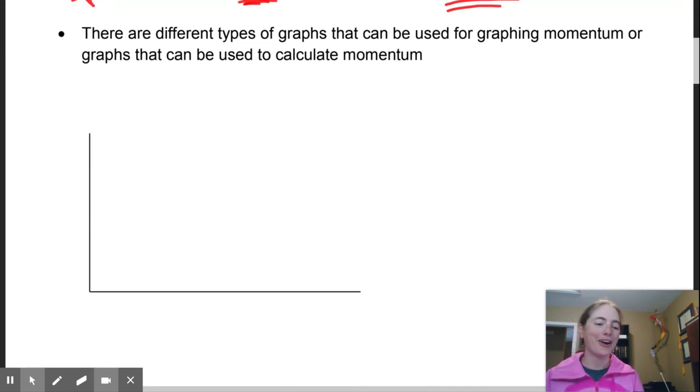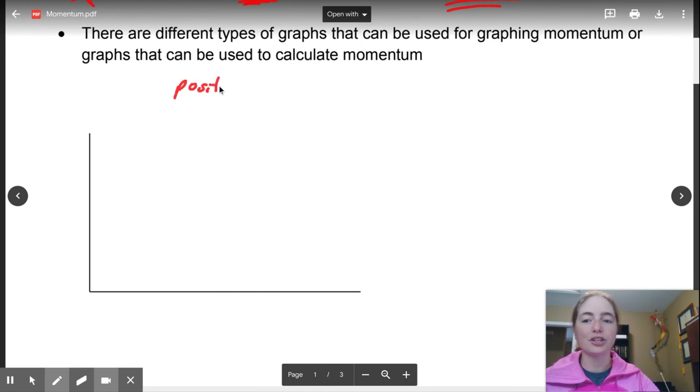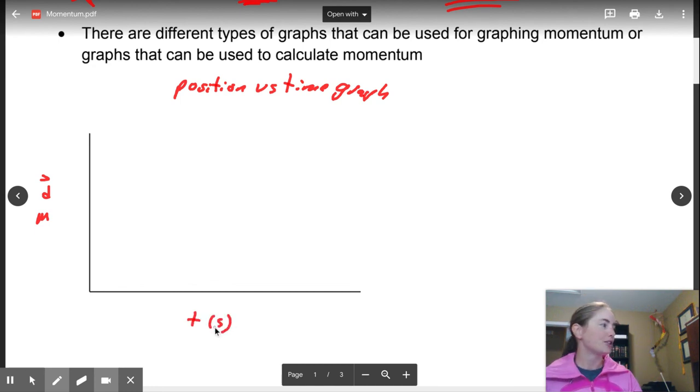As I mentioned in our previous video, graphs are going to be a huge part of this particular course. A lot of what we're going to be doing is relating our equations to graphs and using those to interpret what it is we're seeing. So the first type of graph in which we can use to help us interpret momentum is a position versus time graph. Always title your graphs, ladies and gentlemen.